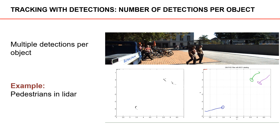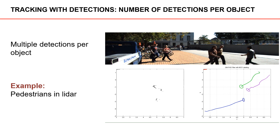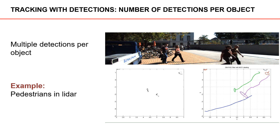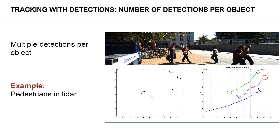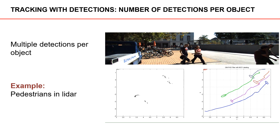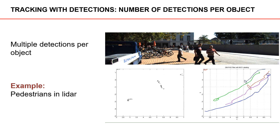Let's look at another example: tracking pedestrians using a LiDAR sensor. As seen in the video clip, there are multiple detections for each pedestrian — we get a small cluster of detections for each one. When pedestrians pass behind each other, they become occluded to the sensor and we get no detections at all. So in this example, tracking pedestrians using 2D LiDAR, we get somewhere between 0 and tens of detections for each pedestrian in each time step.